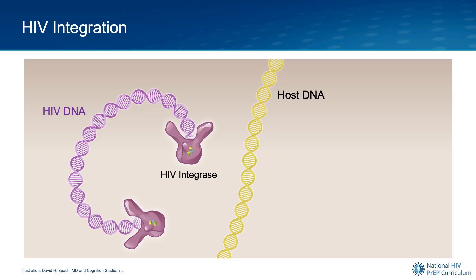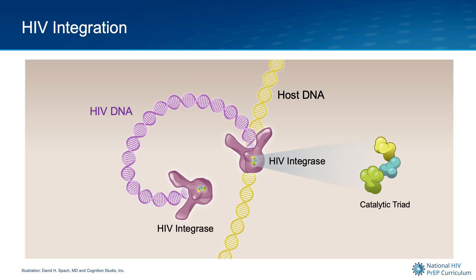After HIV DNA is generated from HIV RNA, the HIV integrase enzyme dimers attach to the ends of the HIV DNA strand. Then one of the integrase dimers docks on the human DNA.